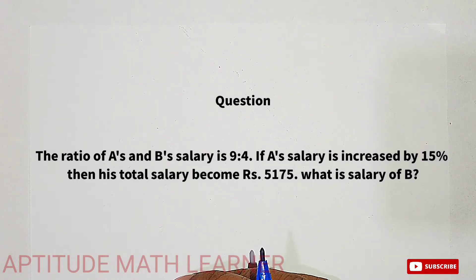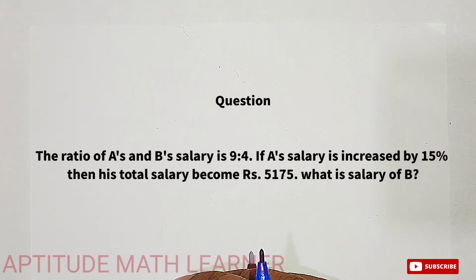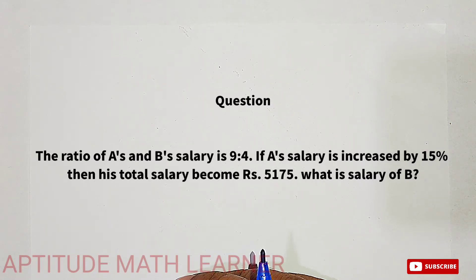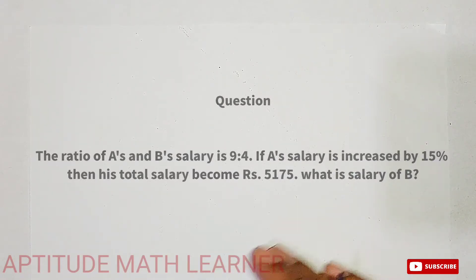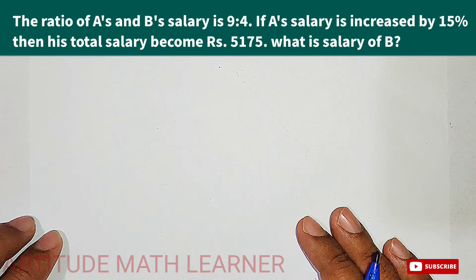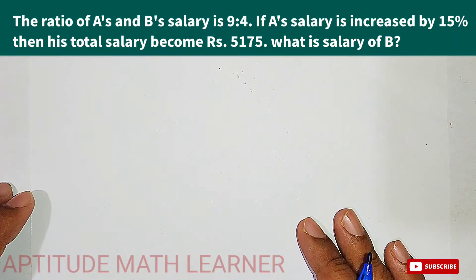The ratio of A's and B's salary is 9 is to 4. If A's salary is increased by 15 percent, then his total salary becomes rupees 5175. What is the salary of B? So here we have to find the salary of B.